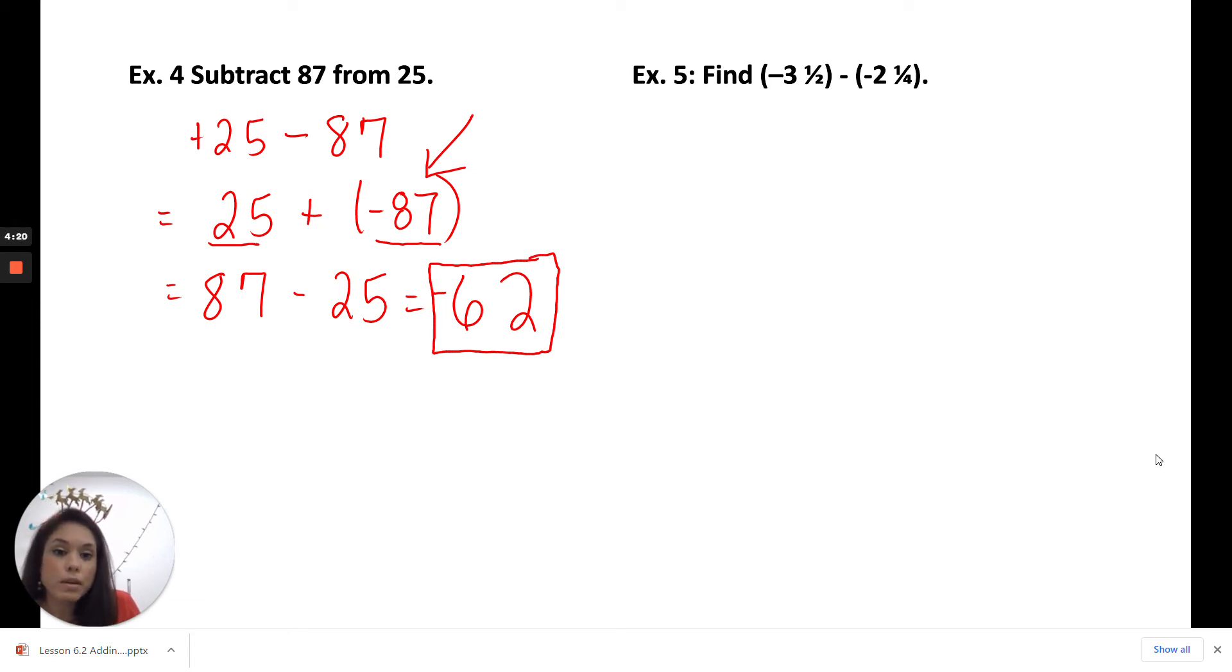Let's work with some fractions here. We have negative 3 and 1 half minus, I'm going to go ahead and put that in parentheses, minus negative 2 and 1 fourth. We are first going to change the signs. So negative 3 and 1 half plus a positive 2 and 1 fourth.